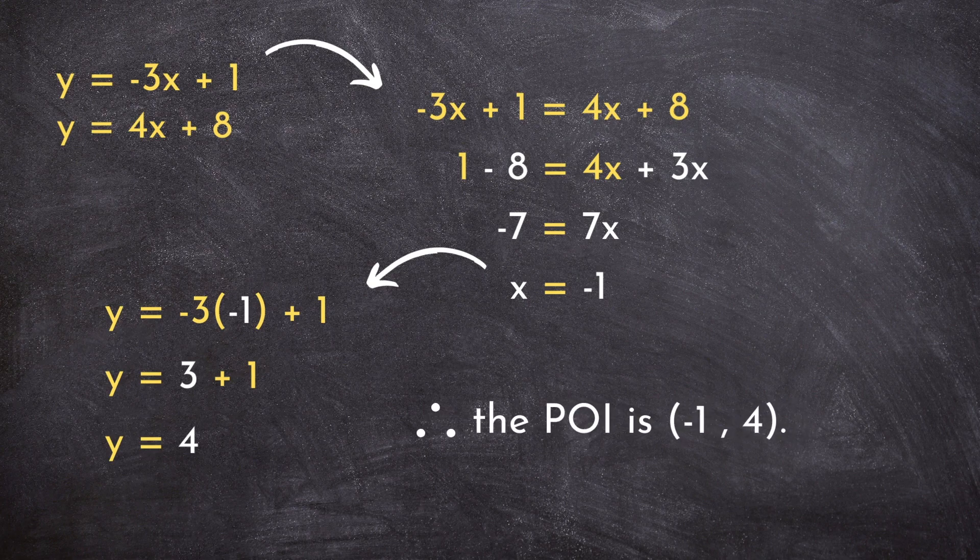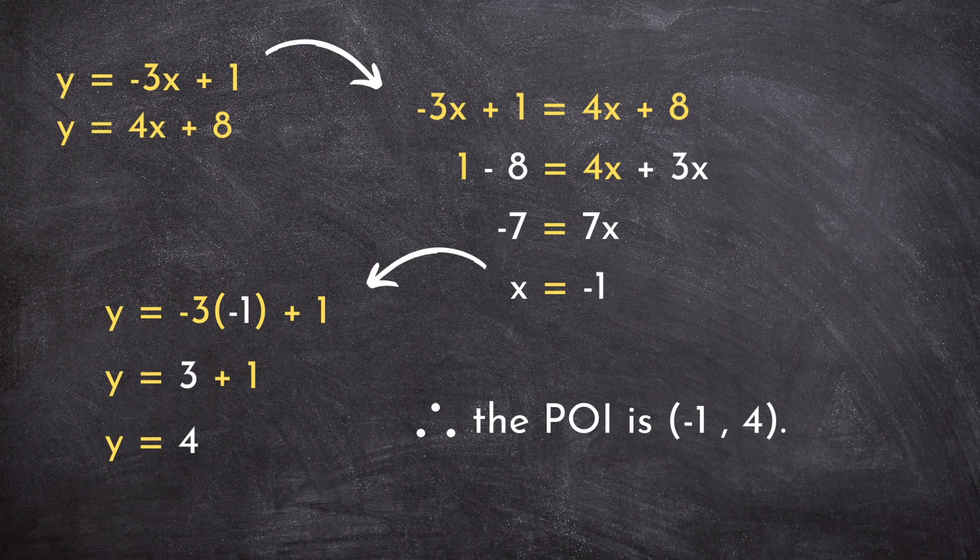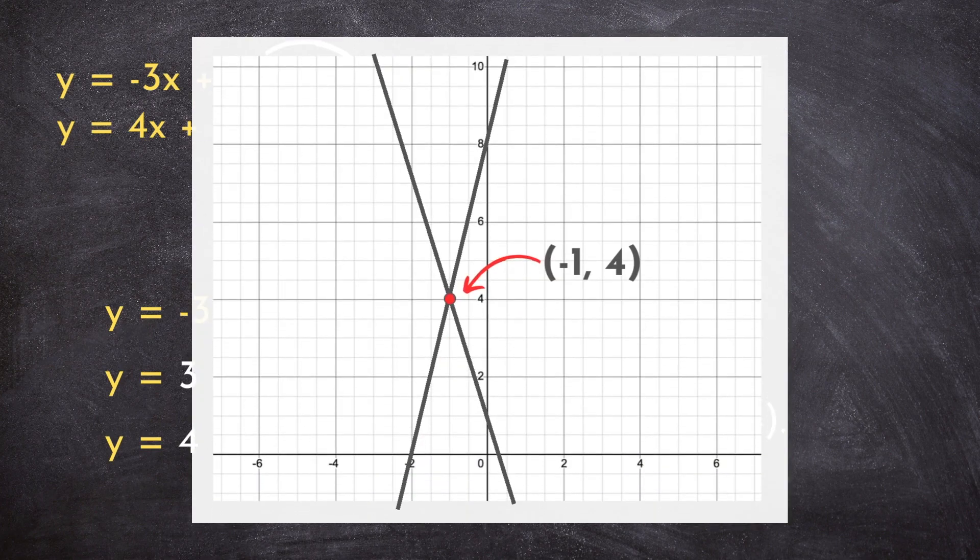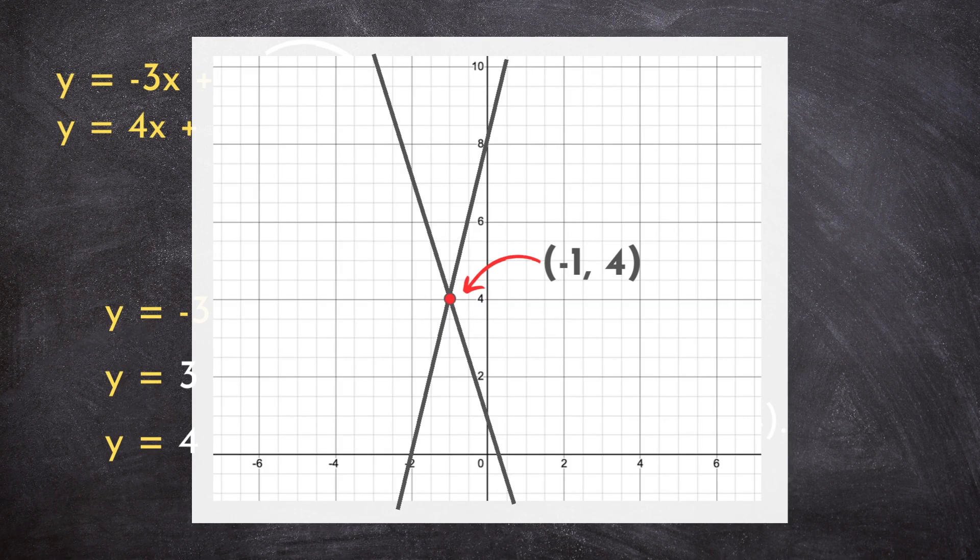And we can confirm that our point of intersection is in fact negative 1, 4 by looking at the graph of these two lines and seeing that they do in fact intersect at that point.